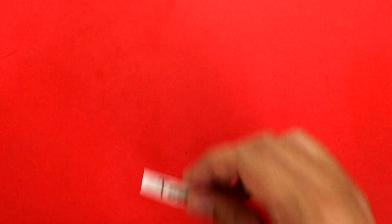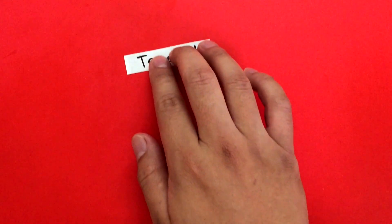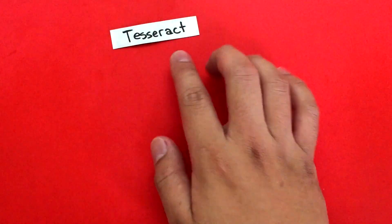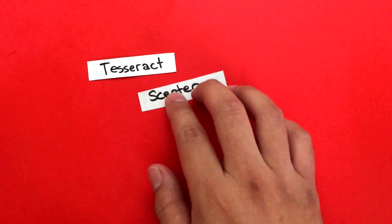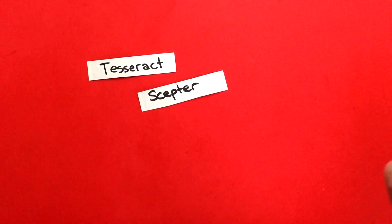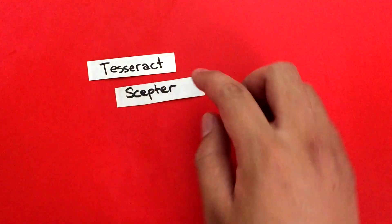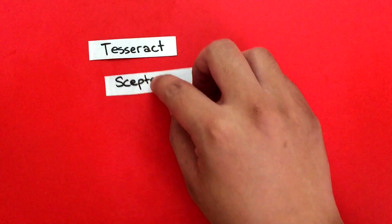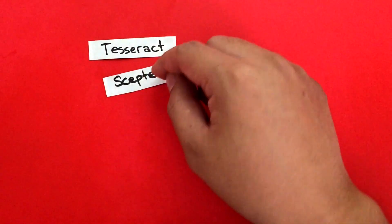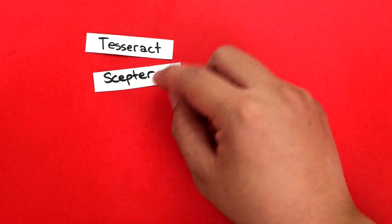Let's recap where they are and where they came from. The first one was the Space Stone, and that was from the Tesseract, which was in Captain America Civil War. The second one was the scepter that Loki got from Thanos in the first Avengers movie. So that is the Mind Stone.